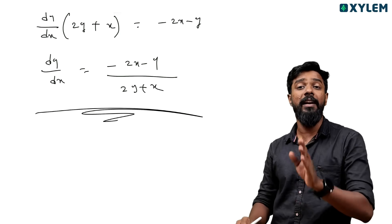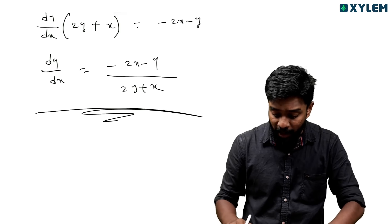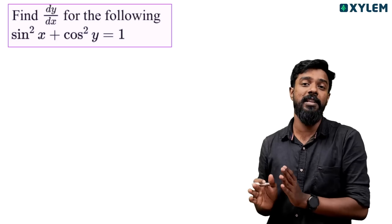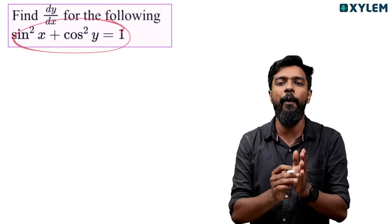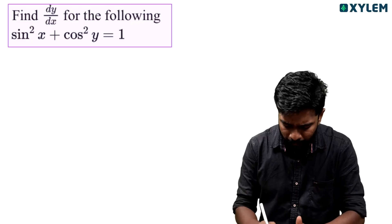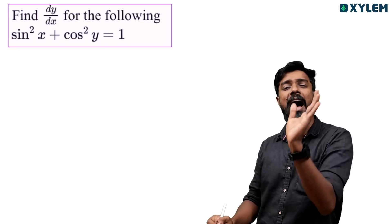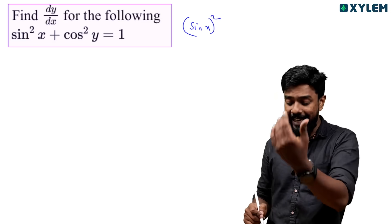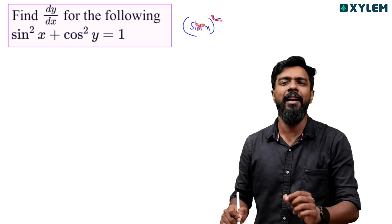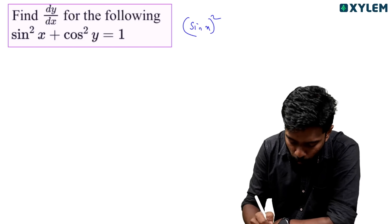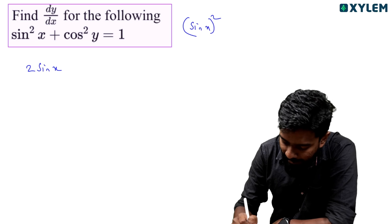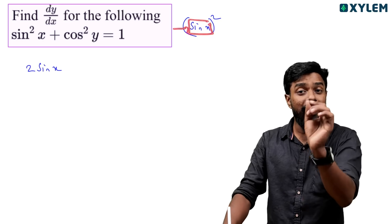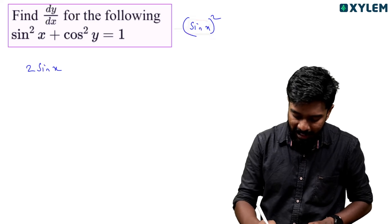Now one simple important question: it is sin squared x. The derivative of sin squared x — we write it as (sin x) whole square. Using the x squared format, derivative is 2 times sin x, then into the derivative of sin x, which is cos x.